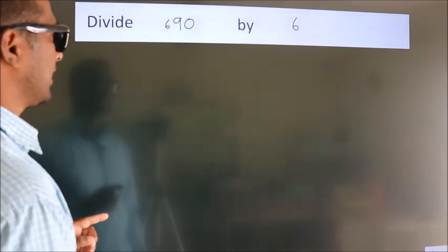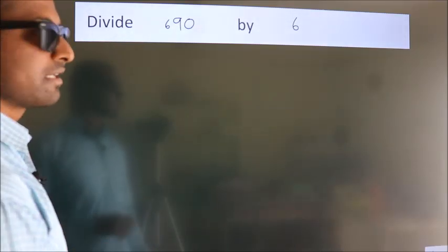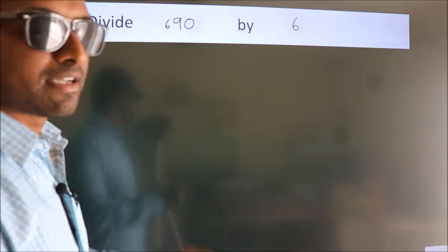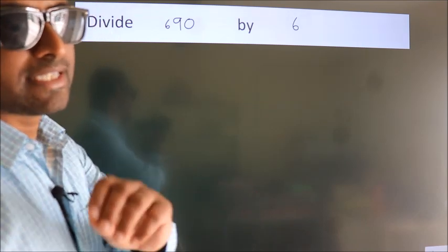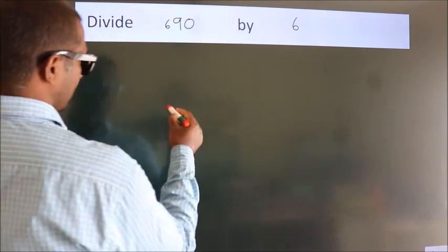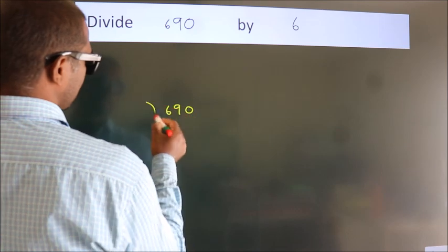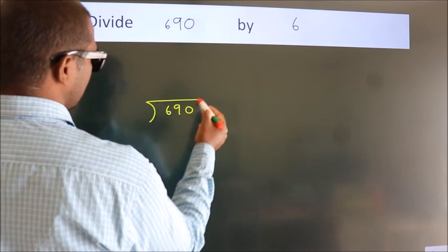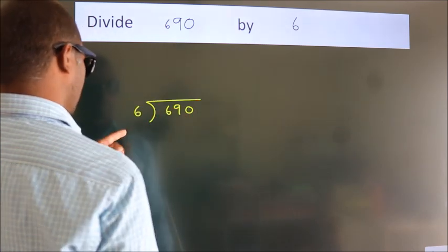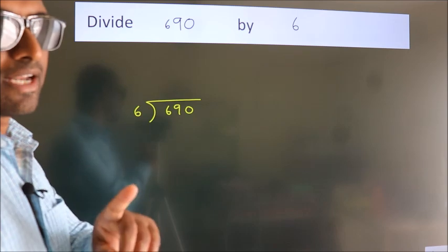Divide 690 by 6. To do this division, we should frame it in this way. 690 here, 6 here. This is your step 1.